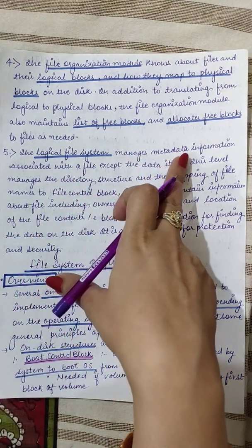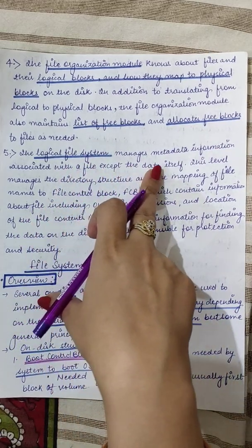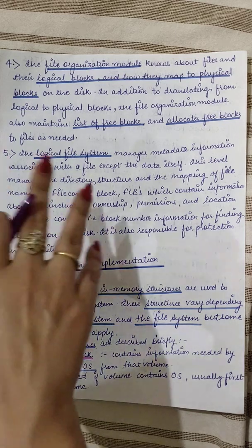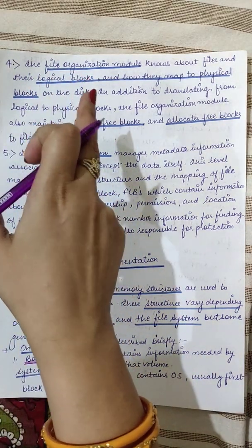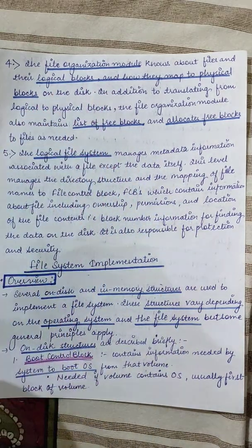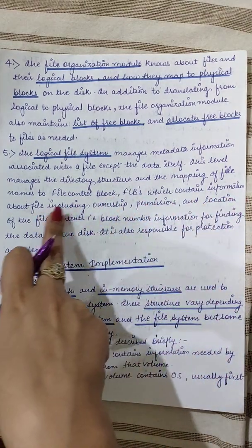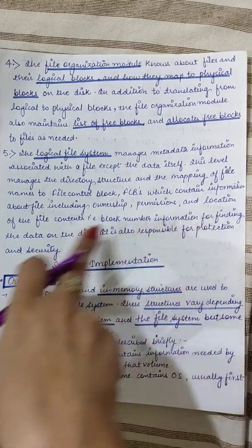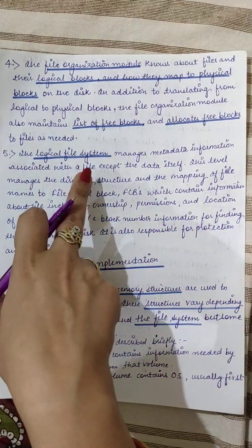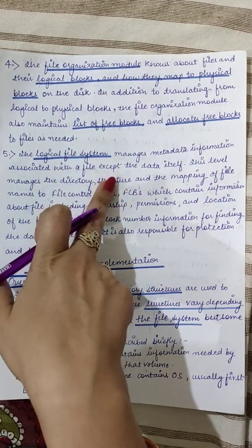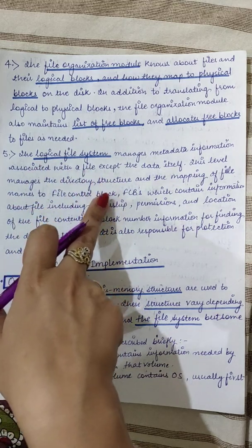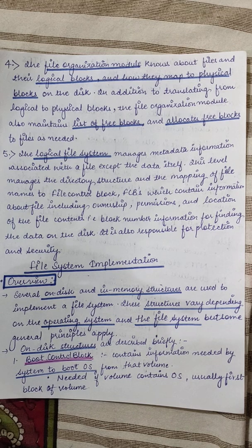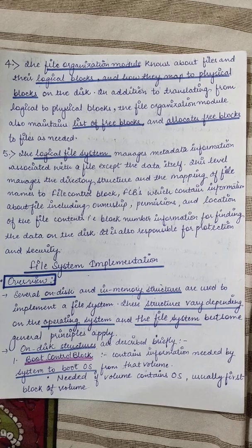The logical file system manages metadata information associated with the file, except the data itself. This level manages the directory structure and the mapping of file names to the file control block (FCB). It deals with all logical concepts — what files are stored, where their entries are in the directory structure. Each file has an FCB containing all information regarding ownership, permissions, and location of the file contents — the block number information for finding data on disk. The logical file system is also responsible for protection and security.